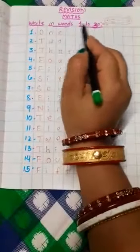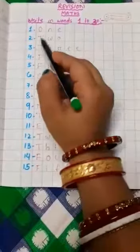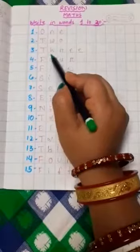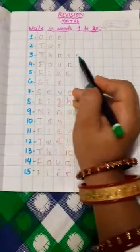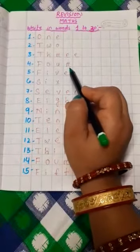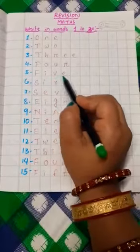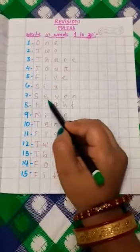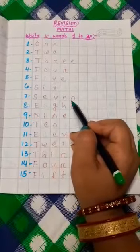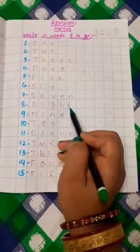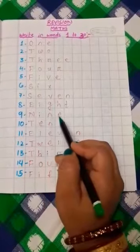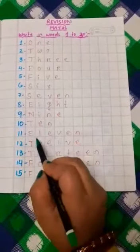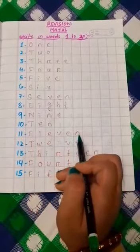Write in words 1 to 30. O-N-E: 1, T-W-O: 2, T-H-R-E-E: 3, F-O-U-R: 4, F-I-V-E: 5, S-I-X: 6, S-E-V-E-N: 7, E-I-G-H-T: 8, N-I-N-E: 9, T-E-N: 10, E-L-E-V-E-N: 11.